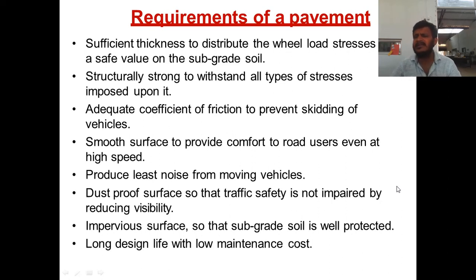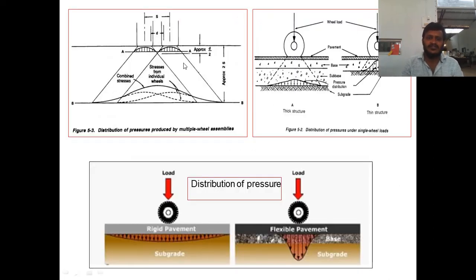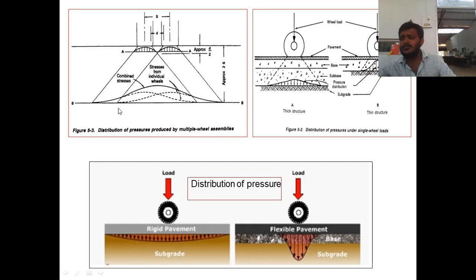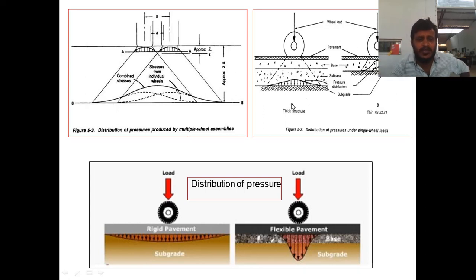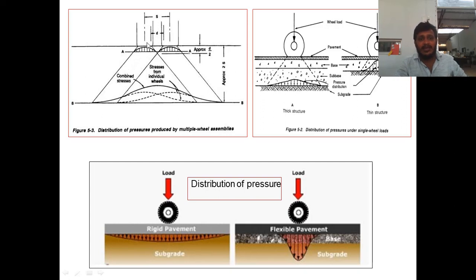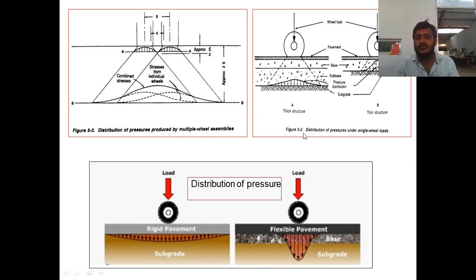The pavement should have a long design life with low maintenance cost. Now regarding equivalent wheel load: this is how the load is transferred to the lower layers. In flexible pavement, grain-to-grain transfer occurs; in rigid pavement, stress is applied to the lower layers in the form of slab action or uniformly distributed load.